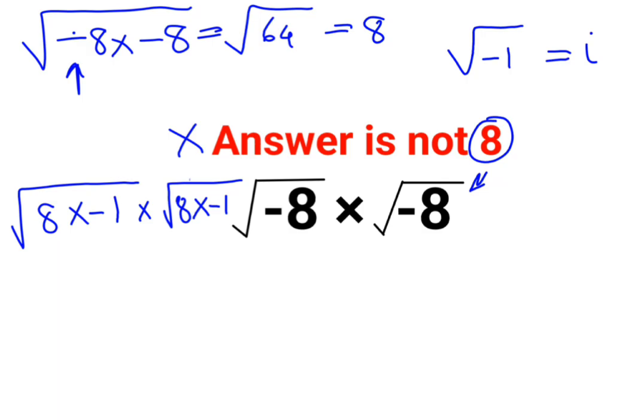So now here, understand. This minus 1 under a root can be taken as root 8 times i. Here also this would be root of 8 into i.